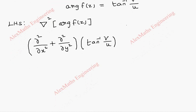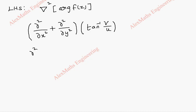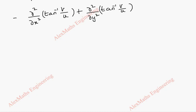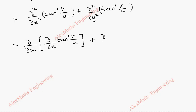We have to take tan inverse v by u for both terms. The first term is dou squared by dou x squared of tan inverse v by u, plus dou squared by dou y squared of tan inverse v by u. In this second derivative, we have to evaluate step by step — first the first derivative, then the second derivative.